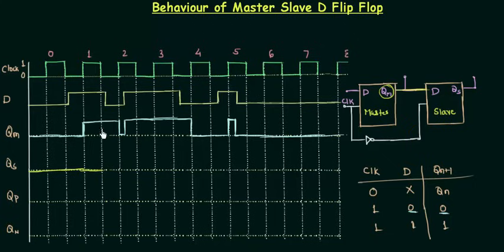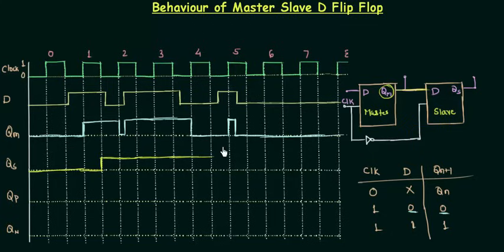When the clock is low and QM is high, QS also becomes high till the next low pulse. For the following low pulse QM is still high, so QS remains high. Again when the clock is low QM is high, so it remains high. For the next low pulse QM is low, so QS finally goes low, and for the last low pulse QM is low so it remains low.